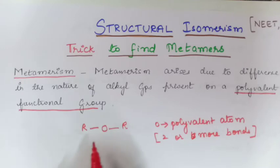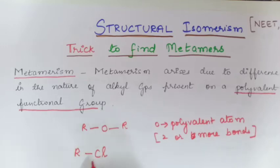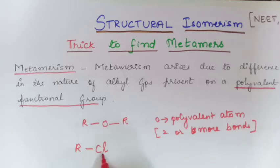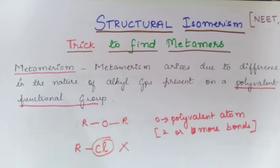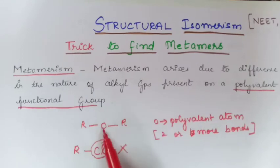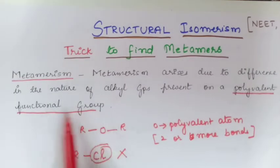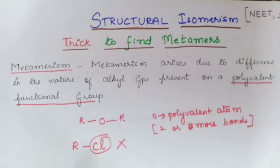Take one more example. Suppose if I take Cl — chloro group. Chloro group can connect to only one alkyl group, so Cl has only one bond. Since a polyvalent group must have two or more bonds, chlorine is not a polyvalent atom. Oxygen is a polyvalent atom, but chlorine is not a polyvalent group. So polyvalent means a functional group or atom connected by two or more bonds.